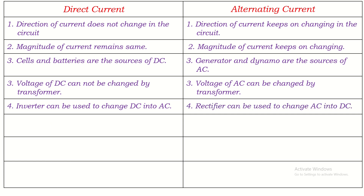On the other side, a rectifier can be used to change AC into DC. The household circuit is supplied with 220 volts, and we can store it in a battery by using a rectifier, because the rectifier converts AC into DC which is then stored in the battery. Later, it can be converted back into AC by using an inverter to supply each and every appliance in the household circuit.